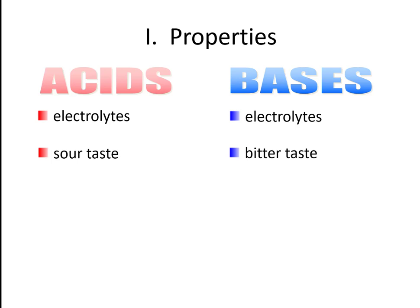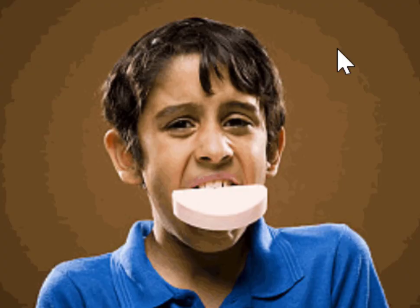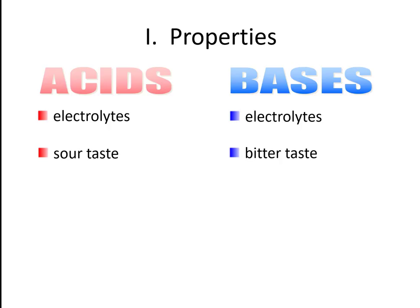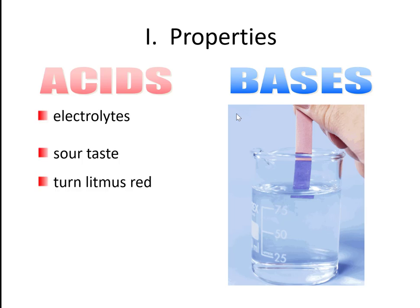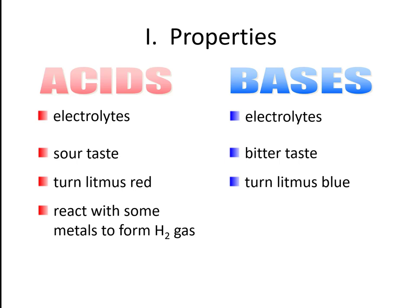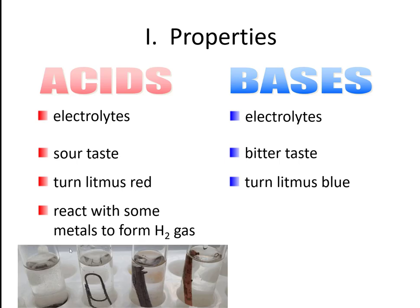Bases, on the other hand, tend to taste bitter. If you've ever had the unpleasant experience of having your mouth washed out with soap, you know bases taste bitter. Acids will generally turn blue litmus paper red; bases will generally turn red litmus paper blue, and that's something we're going to be talking about as we go forward.